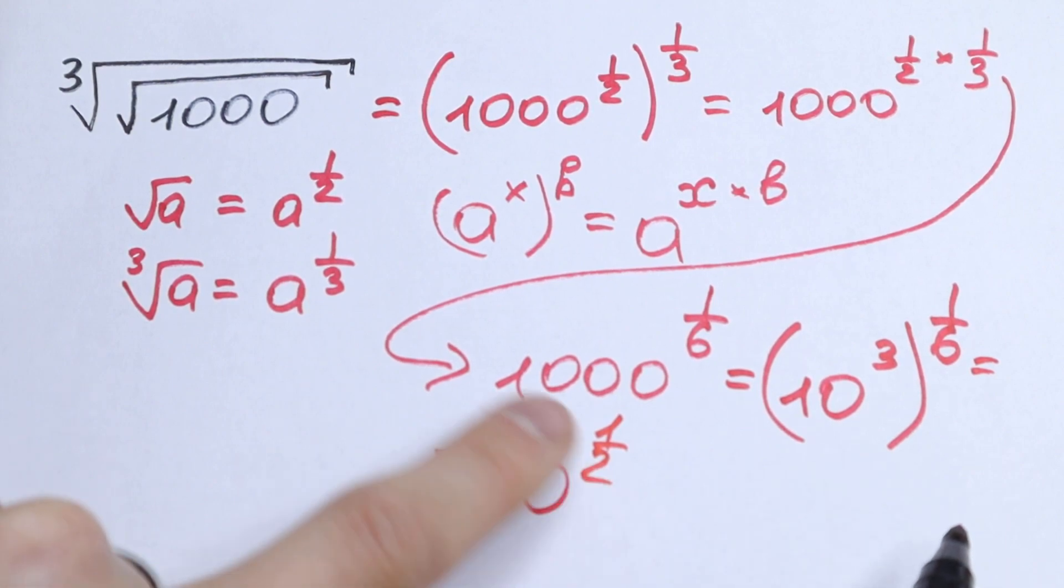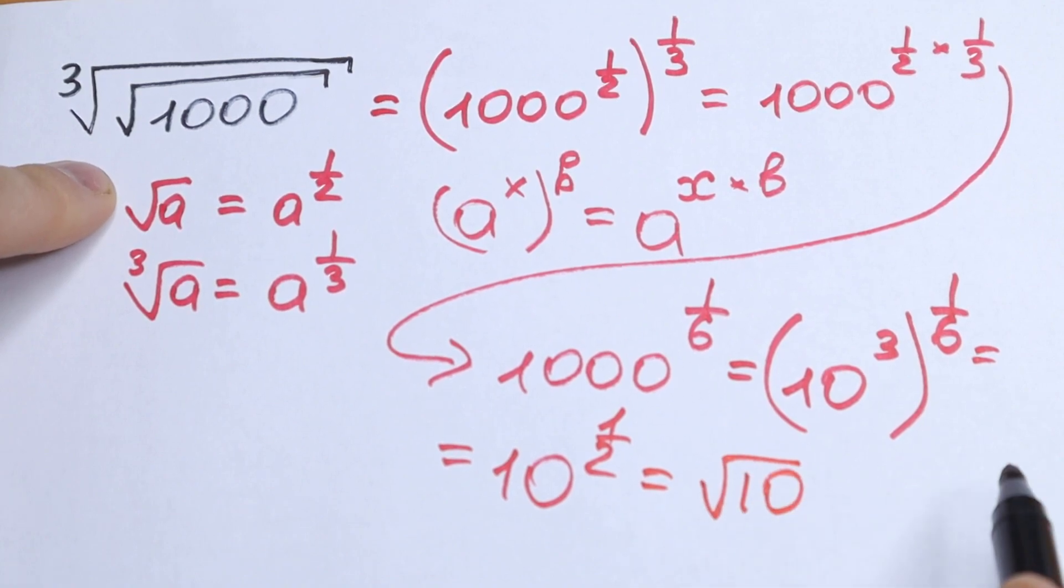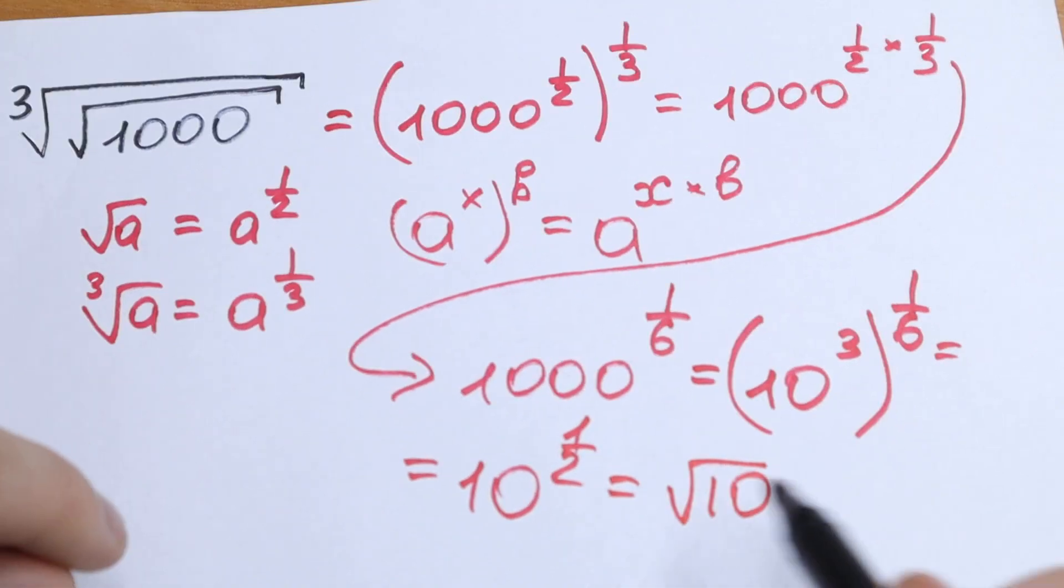And if we rewrite this into the form of square root, we can write it as square root of 10. And this will be our answer.